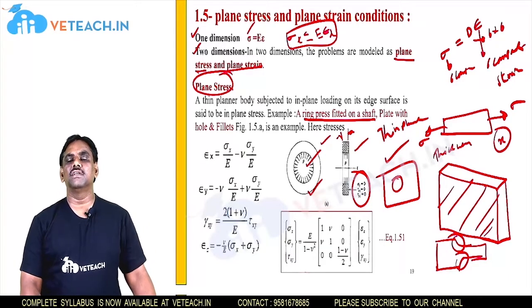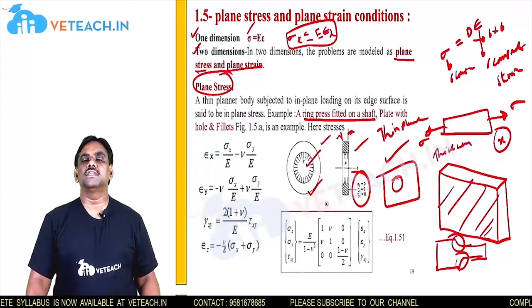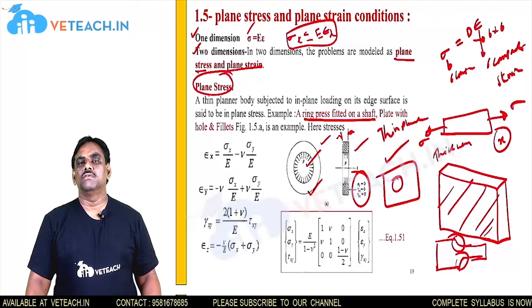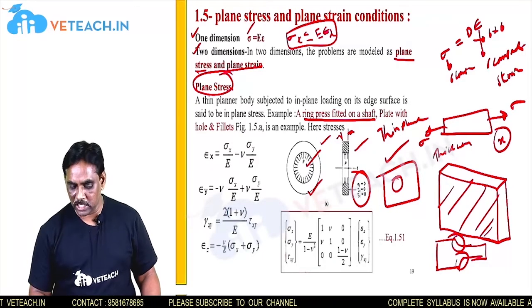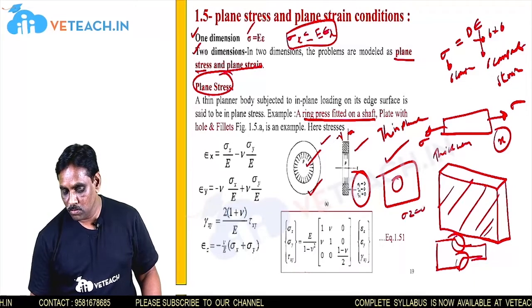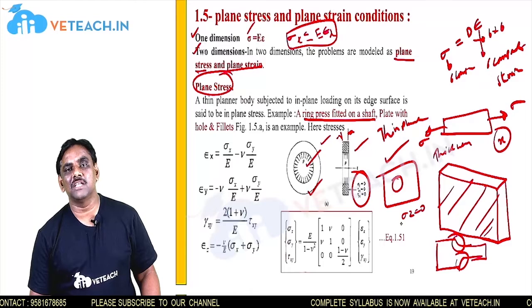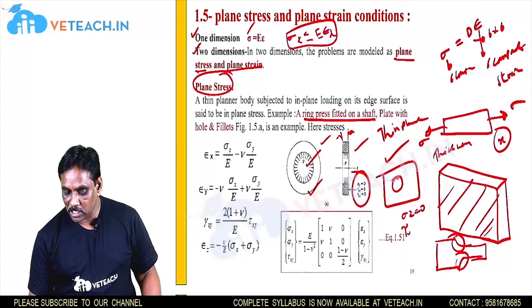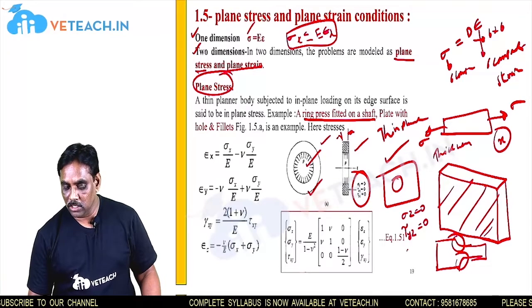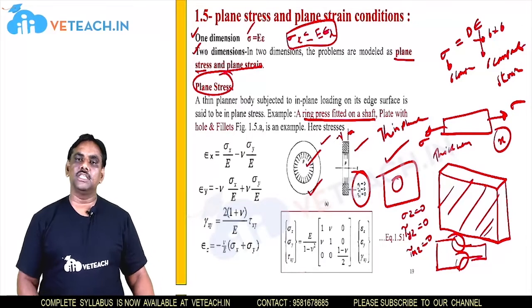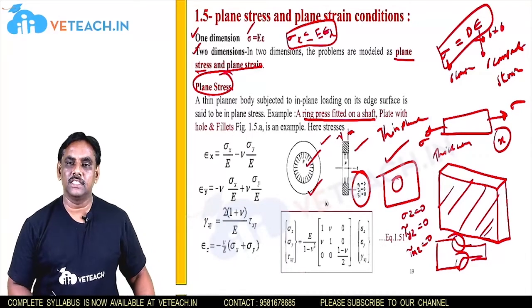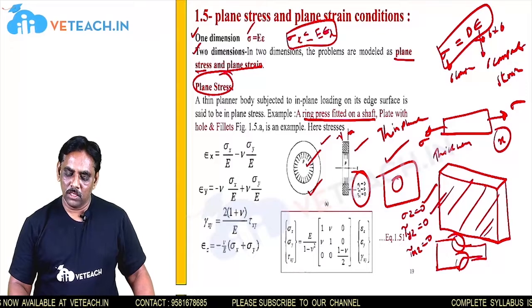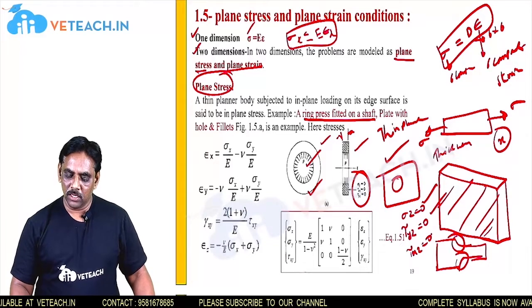We already discussed that in the 3-dimensional case we have 6 components of stresses — three normal stresses and three shear stresses. Now, the z direction stresses will be 0. That is, sigma z will be 0 — the normal stress along the z direction will be 0. Similarly, the shear stress along the z direction: tau yz is also 0, and tau xz is equal to 0. In the previous case we expressed sigma equal to D in a 6 by 6 matrix equation; I can eliminate these terms — sigma z, tau yz, and tau xz are all equal to 0.